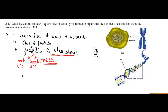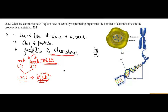Sexual reproduction is nothing but the fusion of male and female gametes. When these two gametes fuse together, they form a zygote that contains a full set of chromosomes. Hence, the formation of gametes by meiosis helps to maintain the number of chromosomes in the progeny.